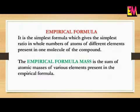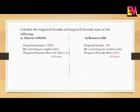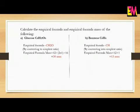Next is the empirical formula — the last term we have to discuss in this unit. The empirical formula of a compound is the simplest formula which gives the simplest ratio in whole numbers of atoms of different elements present in one molecule of the compound. For example, consider hydrogen peroxide. Its molecular formula is H₂O₂. Empirical formula means its simplest ratio, so cancelling the common terms we get the empirical formula as HO, that is a ratio of 1 to 1. That is the empirical formula of hydrogen peroxide.